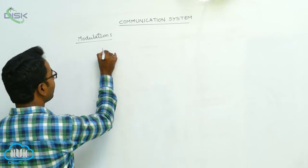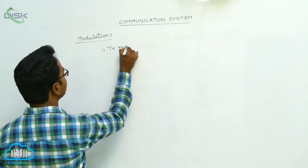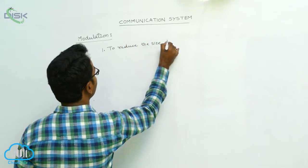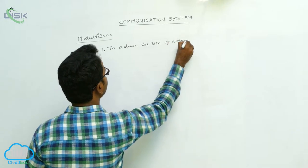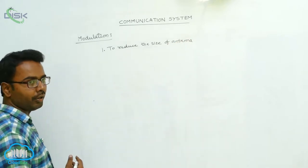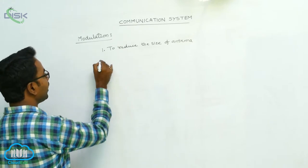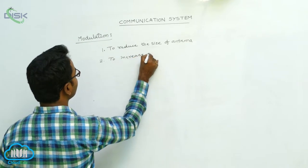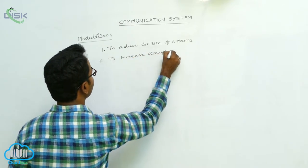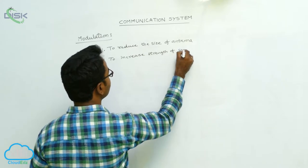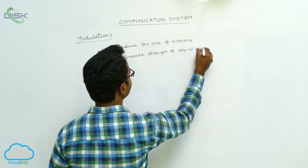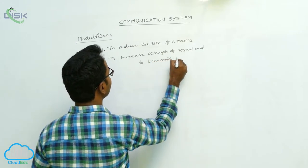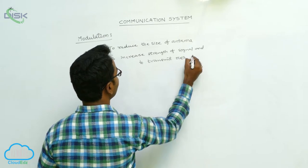The first reason is to reduce the size of antenna. To reduce the size of antenna, we do the modulation. The second reason is to increase strength of signal and to transmit over long distances.